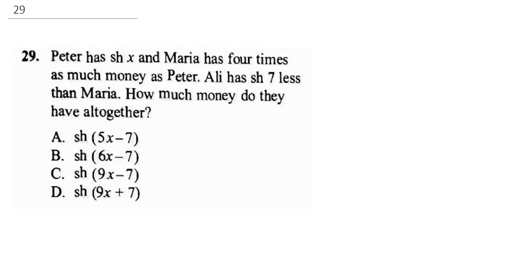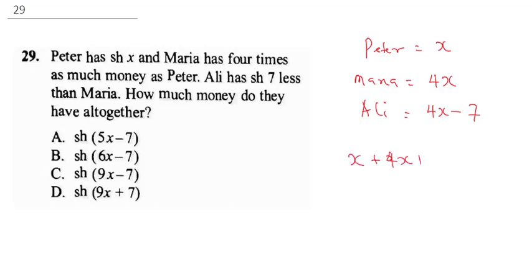Question 29: Peter has x shillings. Maria has four times as much money as Peter, so Maria has 4x. Ali has seven shillings less than Maria, so Ali has 4x minus 7. The total is x plus 4x plus (4x minus 7), which gives 9x minus 7. The correct answer is C.